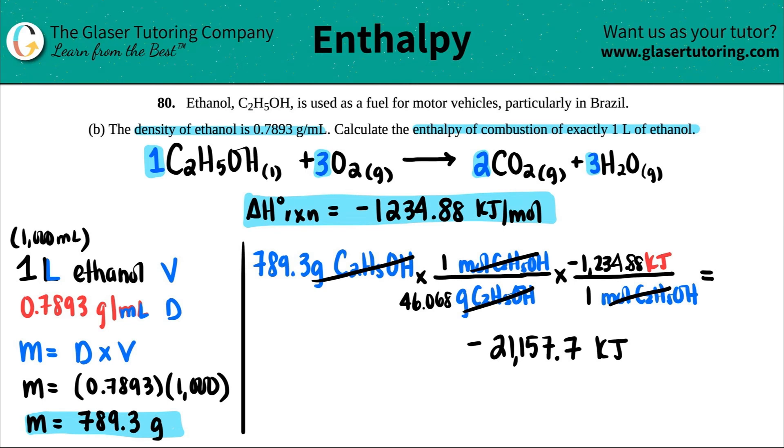Now remember, the negative just means that it's being released. There's no such thing as negative amounts of energy. So you will still produce, or calculate the enthalpy of combustion. You're still going to produce 21,157.7 kilojoules. It's just going to be released into the environment, AKA the surroundings.